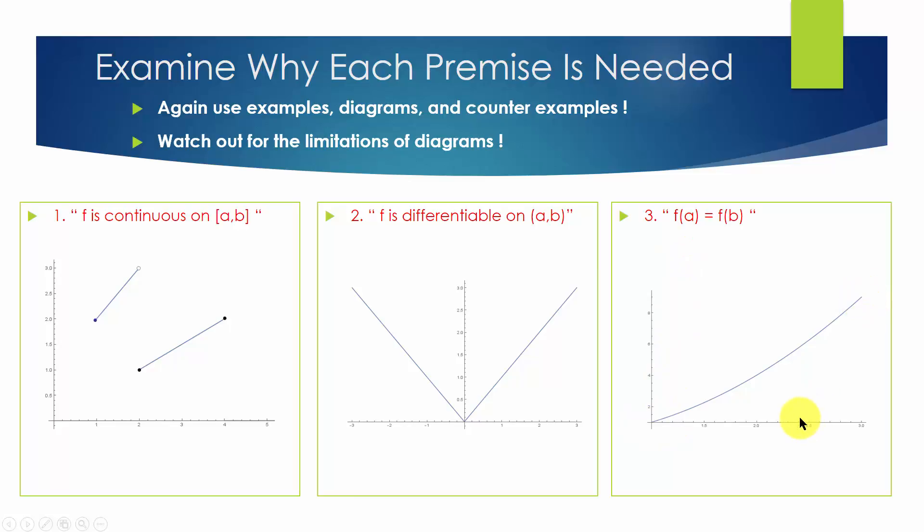Can we find a point between a and b where the derivative is 0? No, we cannot. This proves that the third premise is necessary.